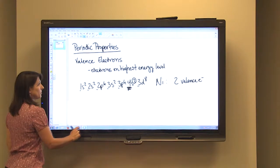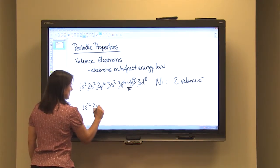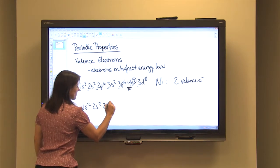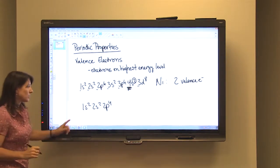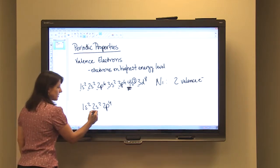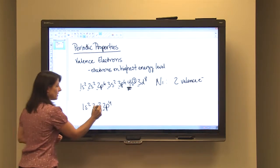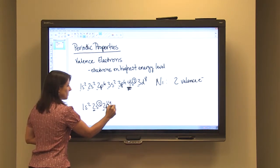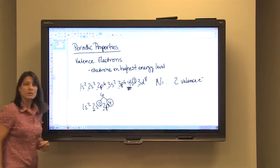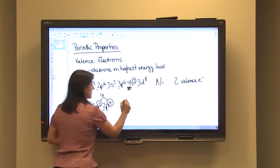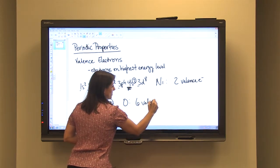When we do the electron configuration for oxygen, we have a total of 8 electrons. The highest energy level is 2. On the second energy level, we have electrons in the S sub-level and the P. So we would have to add them up. So that means we have a total of 6 valence electrons for oxygen, which matches the group number.